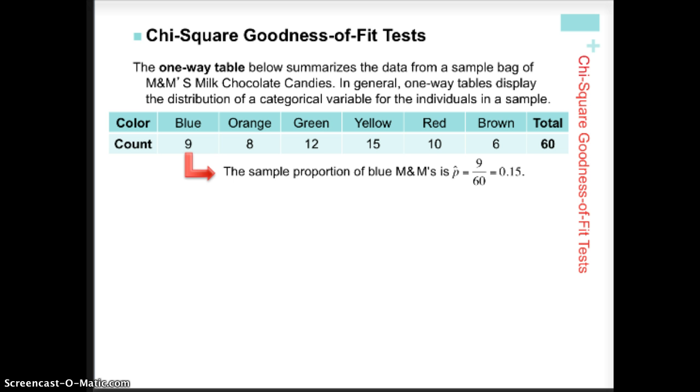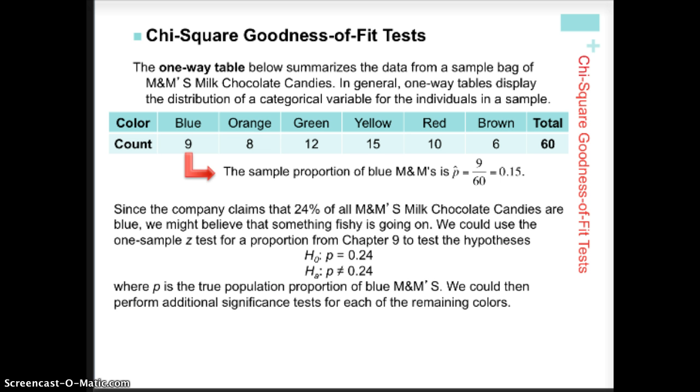You cannot run a chi-square test with percentages or proportions, but we can run it with counts. Now, when we want to calculate the proportion of blues, we would do the nine blues divided by the total of 60. So we have 15%. And that's what we're actually going to run the comparison of the percentages, but we're going to use counts to do it.